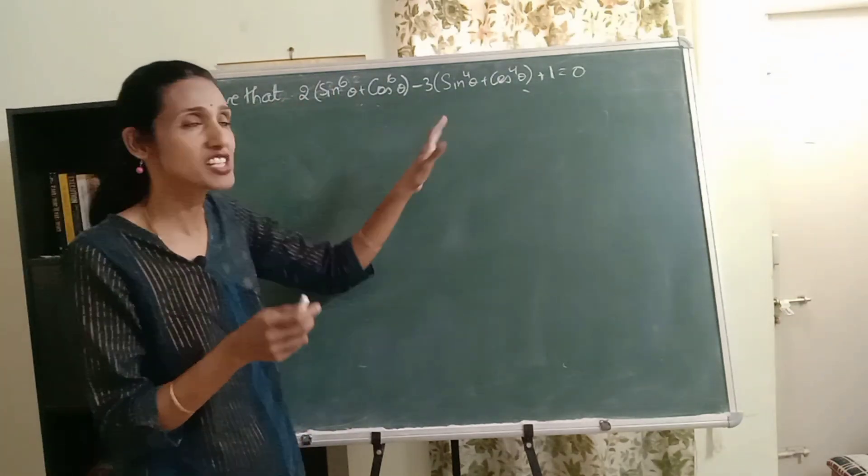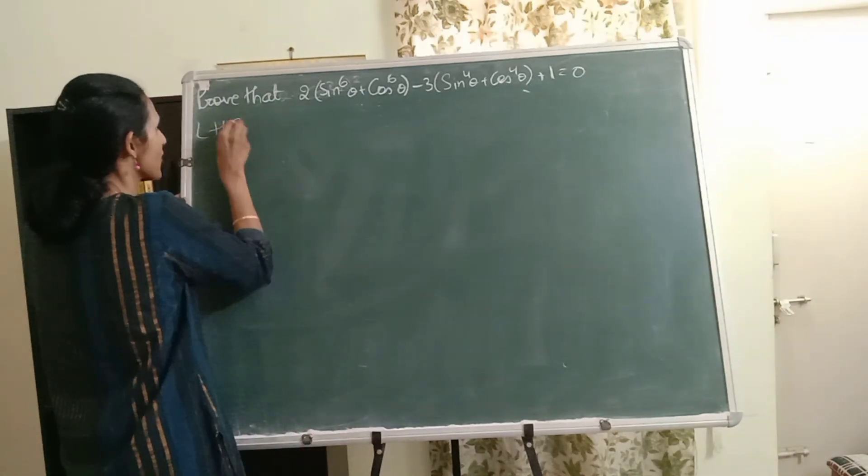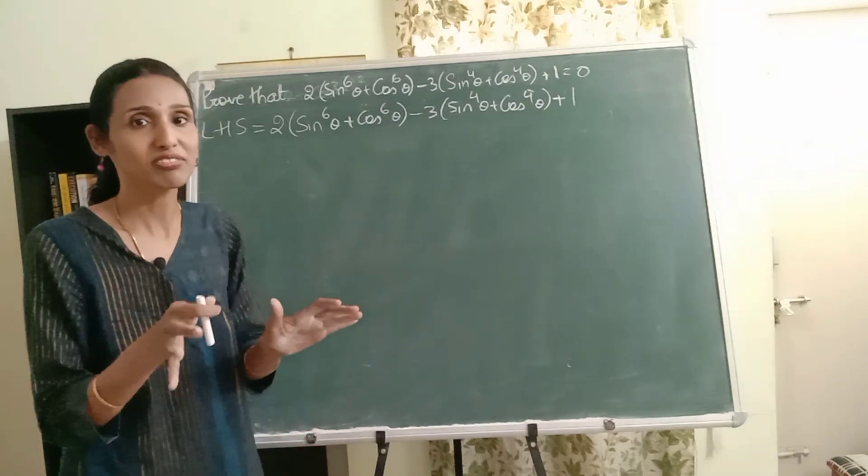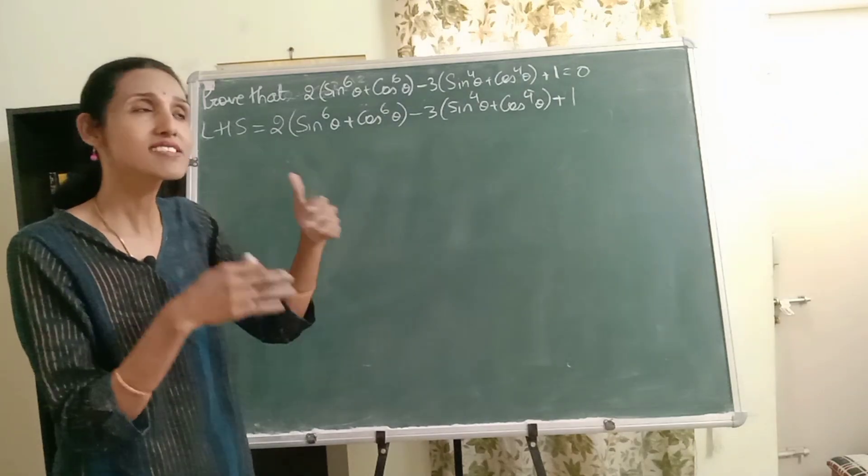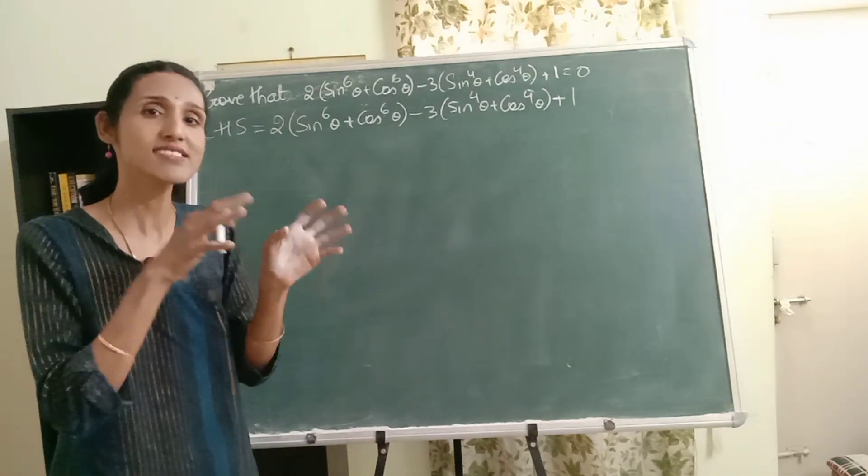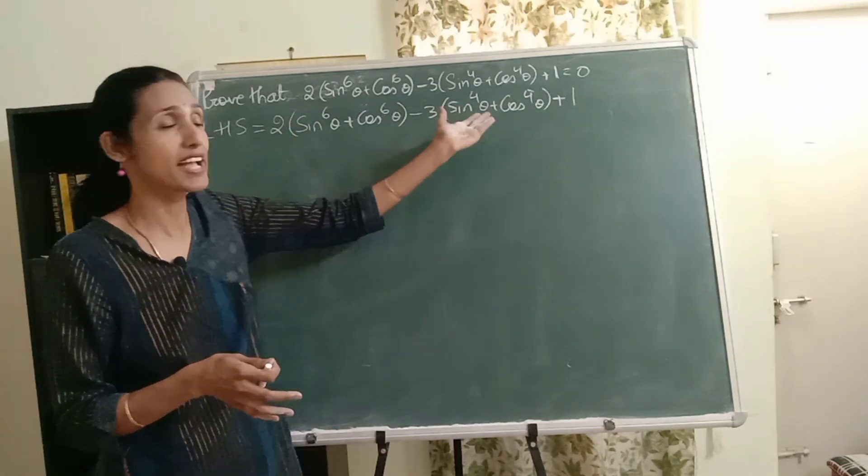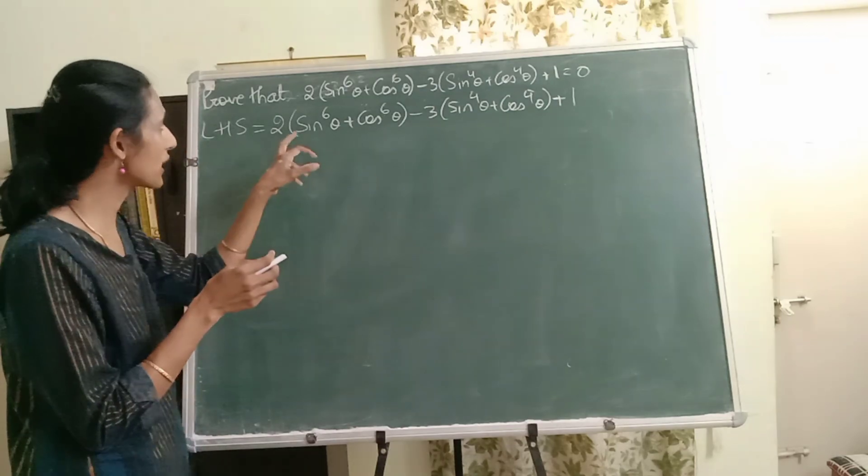Now here obviously the LHS term is more complicated so we'll start with the LHS term. I'll just write that down. Now when I saw this question for the first time I really wondered how we are going to proceed after this step because the identities that we have are all sine square, cos square. We don't have sine raised to 6 or sine raised to 4. So how are we going to proceed?